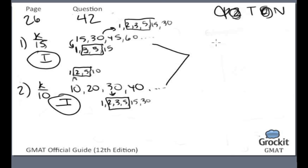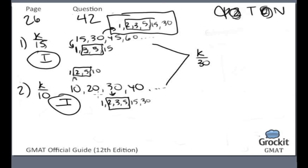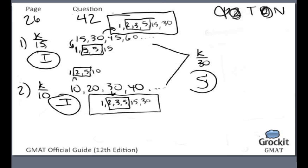Combining the two statements: k must be a multiple of both 15 and 10. The least common multiple of 15 and 10 is 30. We've already established that 30 has at least three prime factors. Any multiple of 30 also has at least three prime factors — once we get to 210 (7 times 30), we have four. Since k is a multiple of 30, it does have at least three different prime factors. The two statements together are sufficient — answer C.